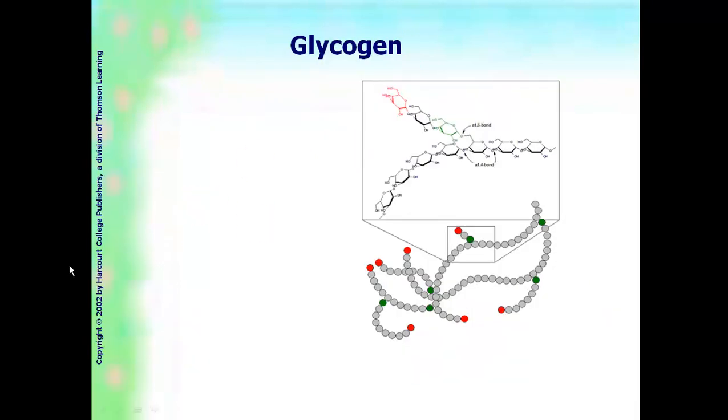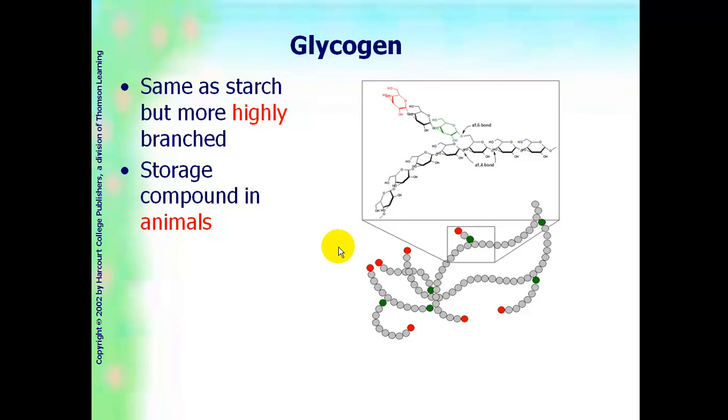The third polysaccharide is glycogen. And as you can see, it is branched as well. It is the same as starch, but it is a little bit more branched. It is a storage compound found in animals. And we find it in our liver and muscle cells specifically.